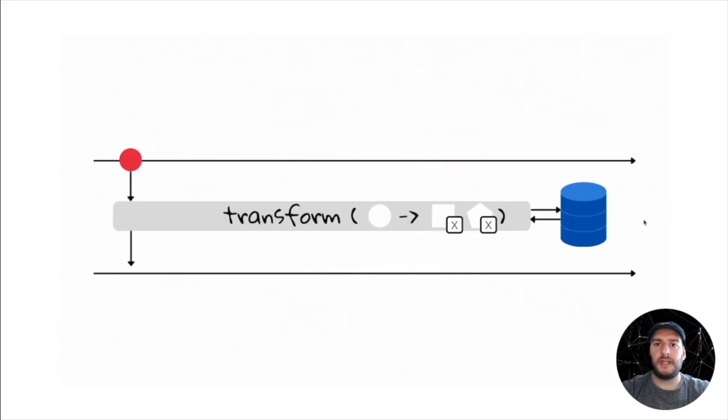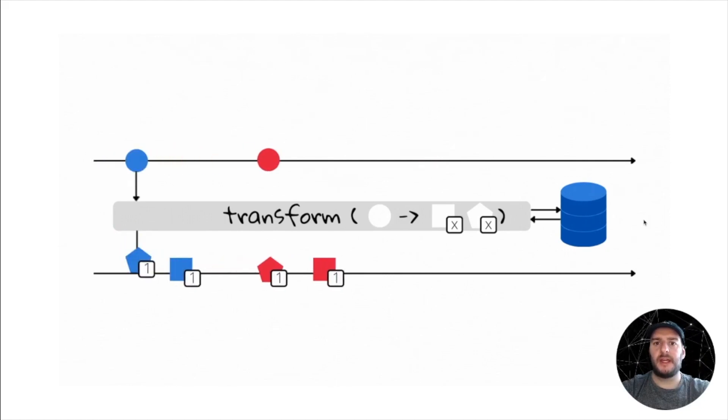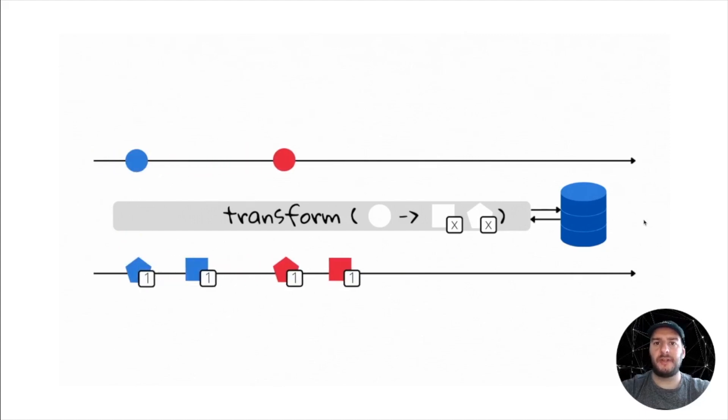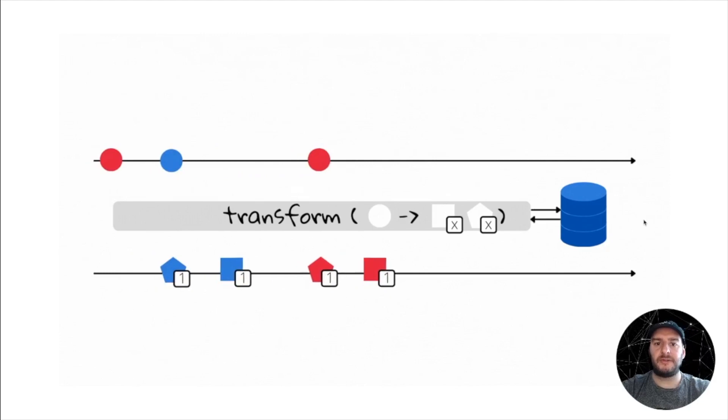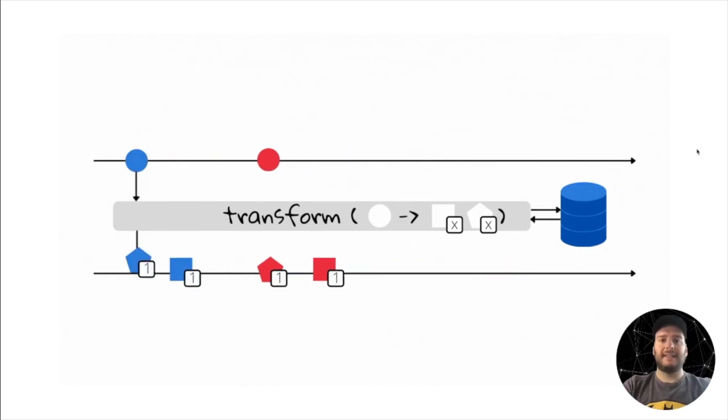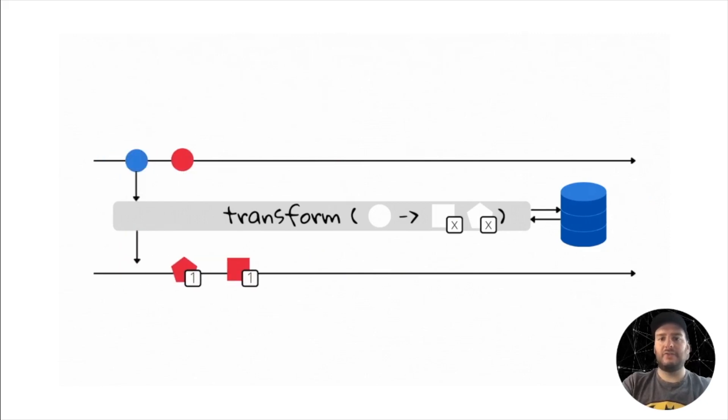In this case, we have a function that transforms circles into squares and pentagons, and it can also count the appearances of a given color. The red circle appears twice, so the last two square and pentagons have the number two in them. And this is possible because the transform operation can be linked to a data store. The data store is where we can store the state of our stateful operations in Kafka Streams. This is a very important concept that we haven't really seen yet, because we haven't touched upon stateful operations. But we will do so in our next tutorials.